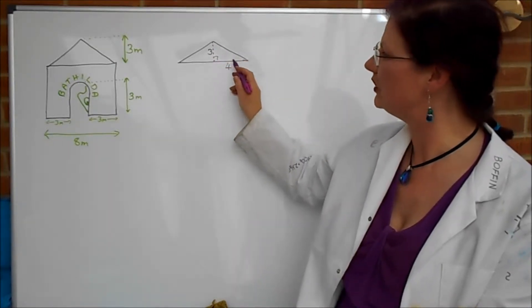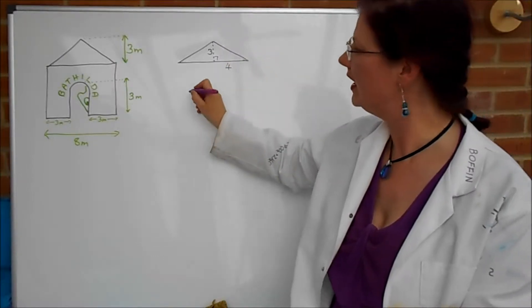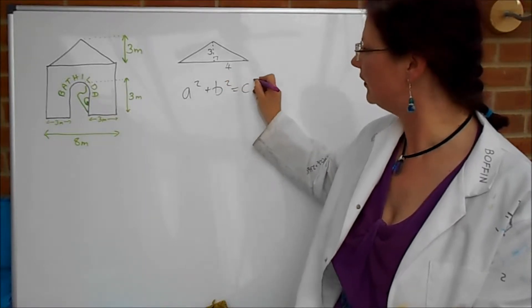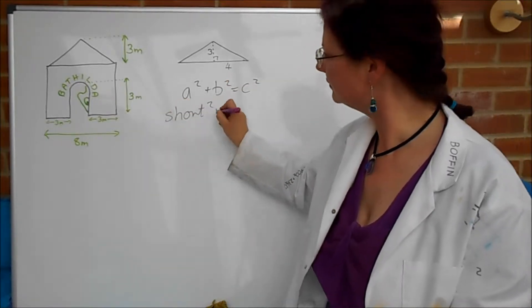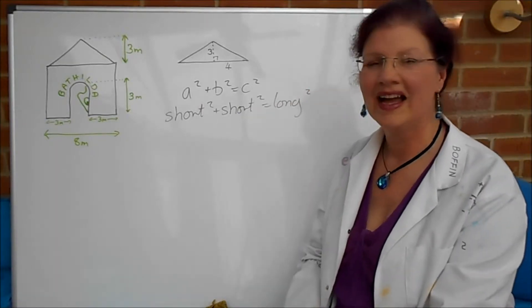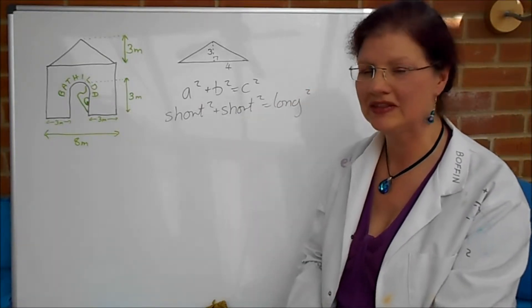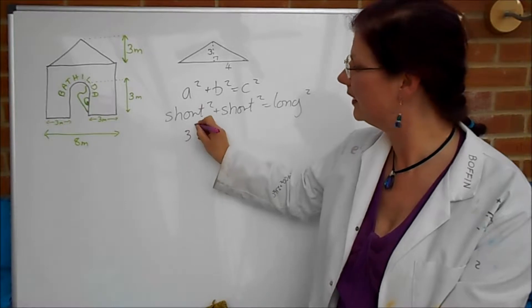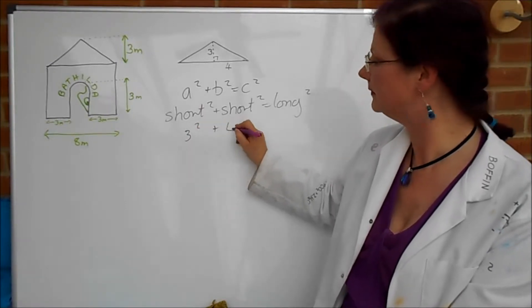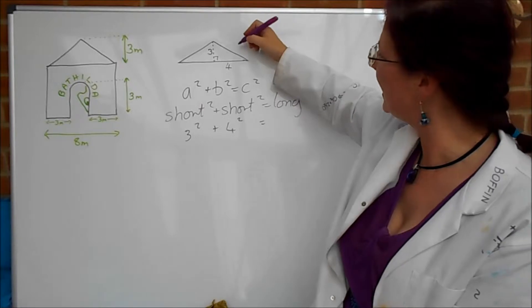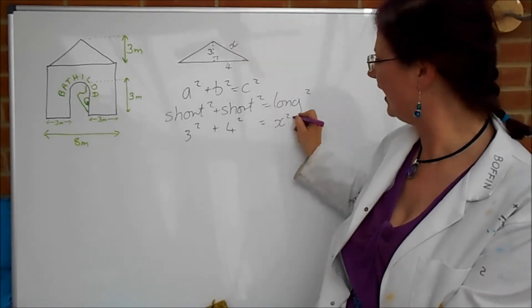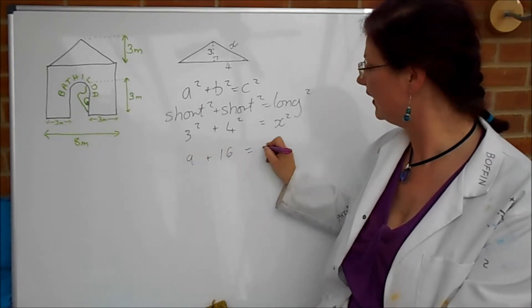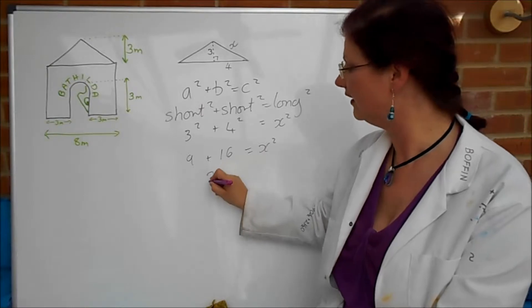So for here we've got a short and another short and we want the long. Pythagoras is usually quoted as a squared plus b squared equals c squared. Whichever way around you prefer it it really doesn't matter. We end up with three squared plus four squared equals the thing we want. I'm going to call it x equals x squared. Three squared that's nine plus four squared that's sixteen and that equals x squared. Those come to twenty-five.